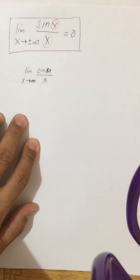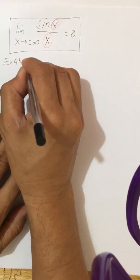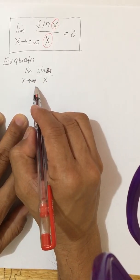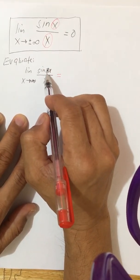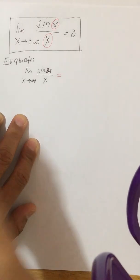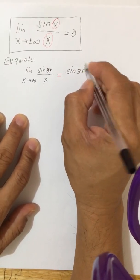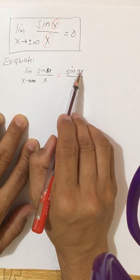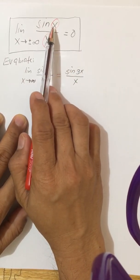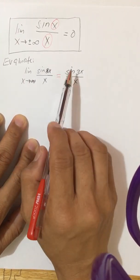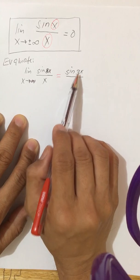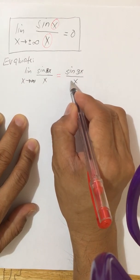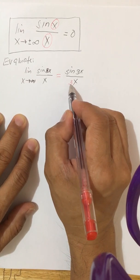So if we are asked to evaluate this — to find the limit of this function as x approaches infinity — we have sine 3x, where the something after sine is 3x, but the denominator is only x. What is lacking in the denominator is the factor of 3. So to produce the required form, we need to multiply the denominator by 3.